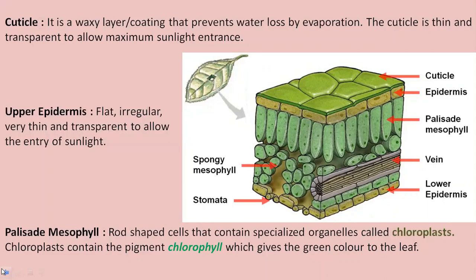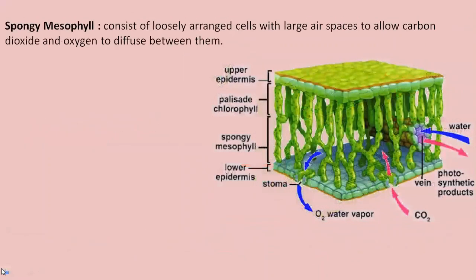The next layer, just below the palisade mesophyll, has loosely arranged cells with large air spaces — these are the spongy mesophyll. As you can see in the diagram, spongy mesophyll cells are smaller than those of the palisade mesophyll, and the large air spaces between them allow easy diffusion of carbon dioxide and oxygen.